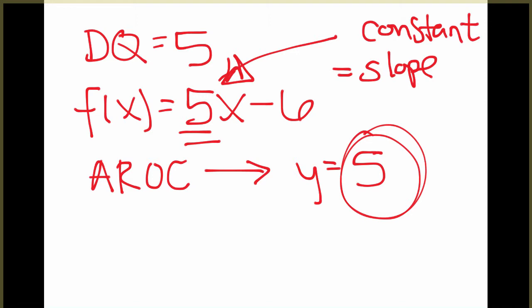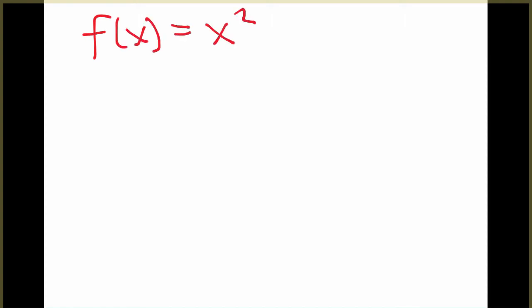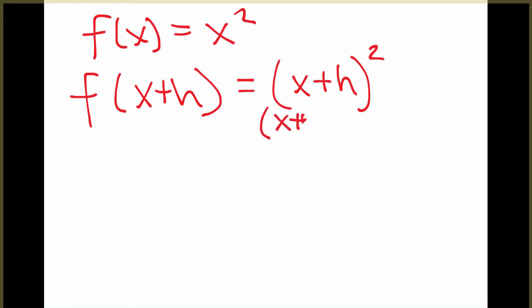Okay, let's look at one more example where it's not a constant average rate of change. I'm going to look at the example f of x equals x squared. First, I'm going to find the average rate of change by beginning by finding f of x plus h. So I replace the x with x plus h. And remember, x plus h squared really means we have to do x plus h times x plus h.